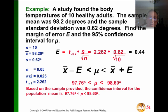Well, the error equals t alpha divided by 2 times standard deviation over the square root of n. T alpha is 2.262.